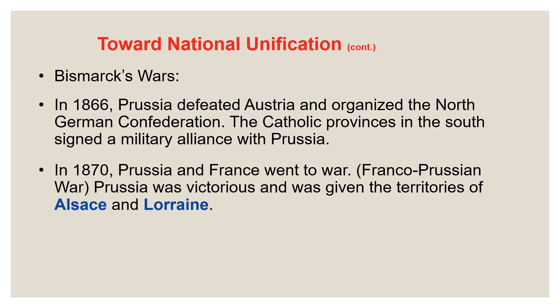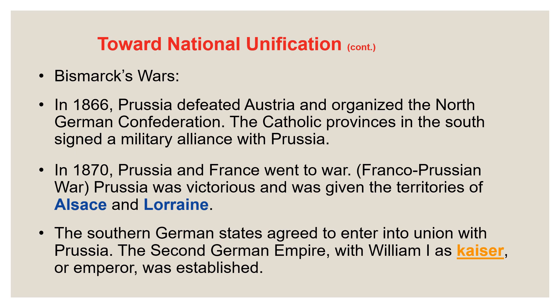After the war, we have a strong authoritarian German Empire controlling a big chunk of Central Europe. France was left with a lot of animosity and resentment toward Germany — they established a Third French Republic, but the resentment toward Germany would come to fruition in World War One, when they would be on opposite sides. The southern German states agreed to enter the union with Prussia — what they called the Second German Empire — with William I as Kaiser or Emperor established, completing German unification.